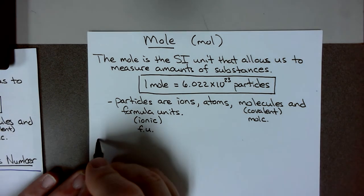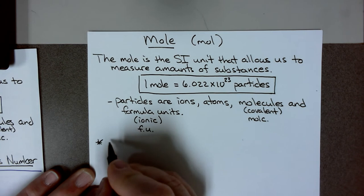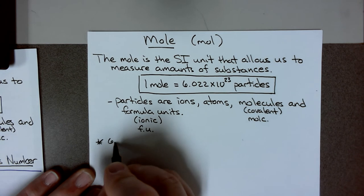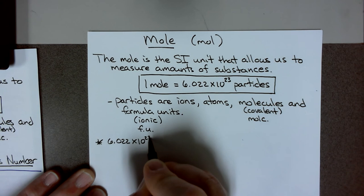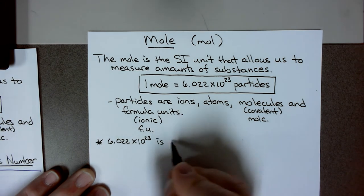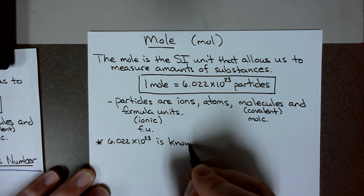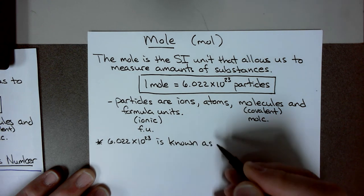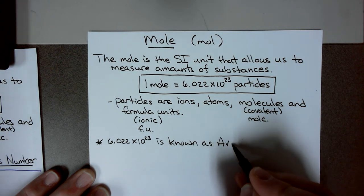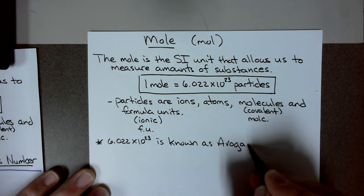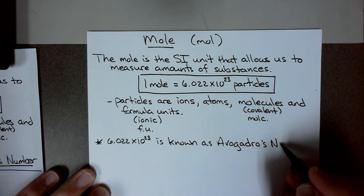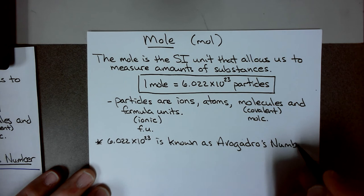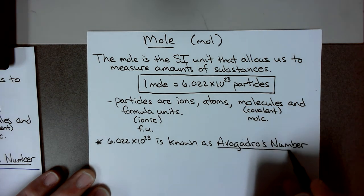There is a name for this number. 6.022 times 10 to the 23rd is known as Avogadro's number. That's how I will refer to it when talking about conversion — you need to use Avogadro's number to convert from moles to particles.